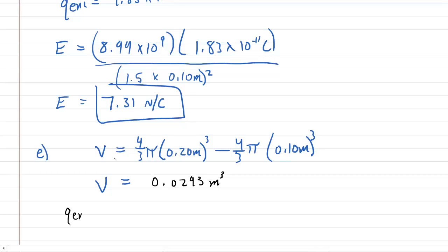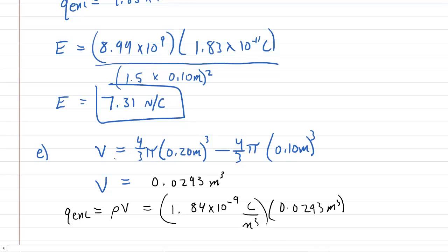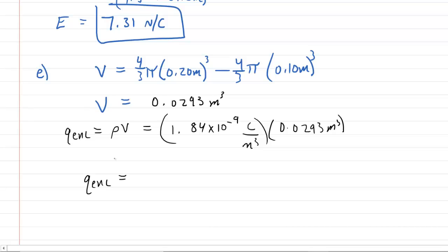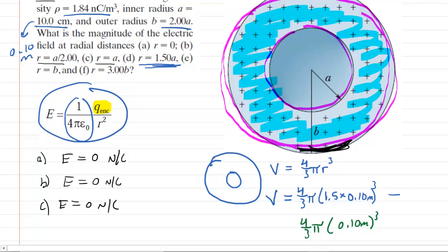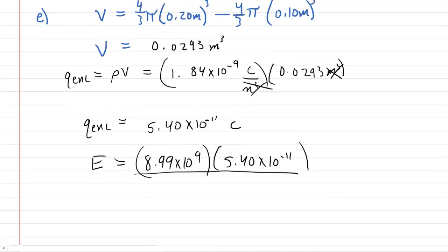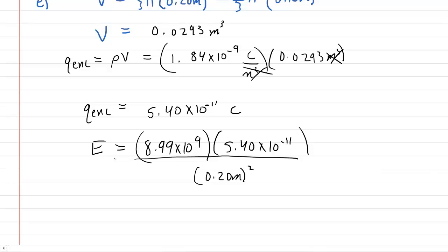Next, we get the enclosed charge by multiplying the volume charge density by the donut volume: 1.84 × 10⁻⁹ coulombs per meter cubed times 0.0293 meters cubed. The enclosed charge comes out to about 5.4 × 10⁻¹¹ coulombs. Going back to the equation, E = (8.99 × 10⁹) × (5.4 × 10⁻¹¹) divided by (0.2 m)², giving an electric field magnitude of about 12.1 newtons per coulomb. That is the correct answer to part E.